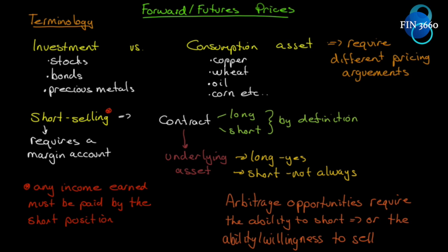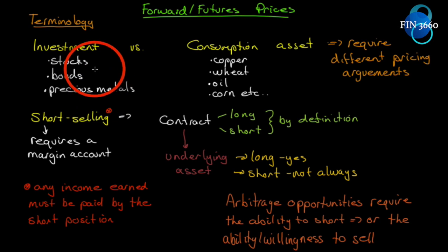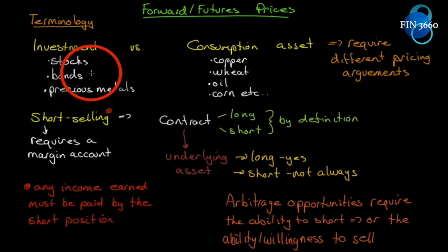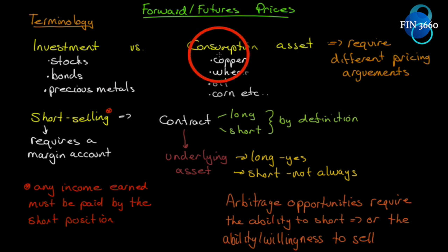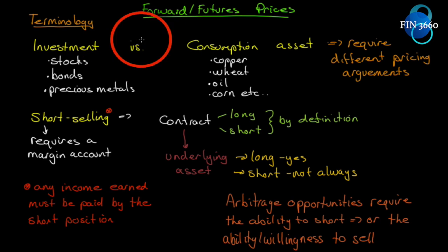Let's get some terminology out of the way first so we're all speaking the same language. Investment versus consumption asset: an investment asset is something like stocks, bonds, or precious metals — something you own for its value, stream of income, or potential capital gains. A consumption asset, on the other hand, is something you buy for use. You don't hold on to it for income or future value — you actually buy it to consume it.